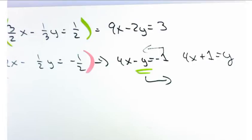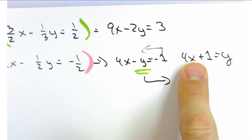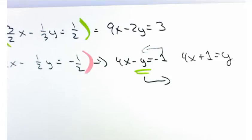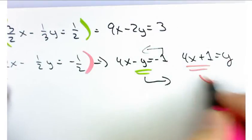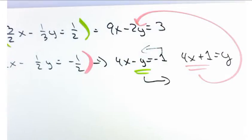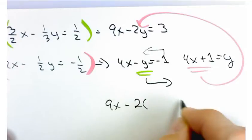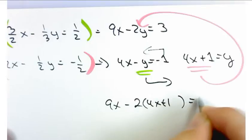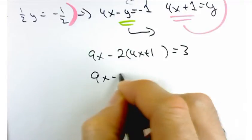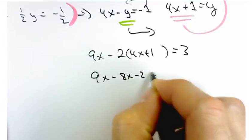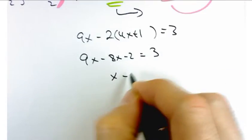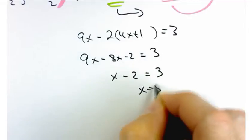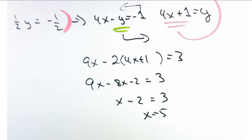And that's nice. That's very handy. Because that means that y and 4x plus 1 are interchangeable. And I can take that expression here and plug it into the other equation. Make sure that you plug it into the other equation. Don't plug back into the same equation. This is going to be 9x minus 2 times 4x plus 1 equals 3. If you distribute the negative 2, we get x minus 2 equals 3 or x equals 5.